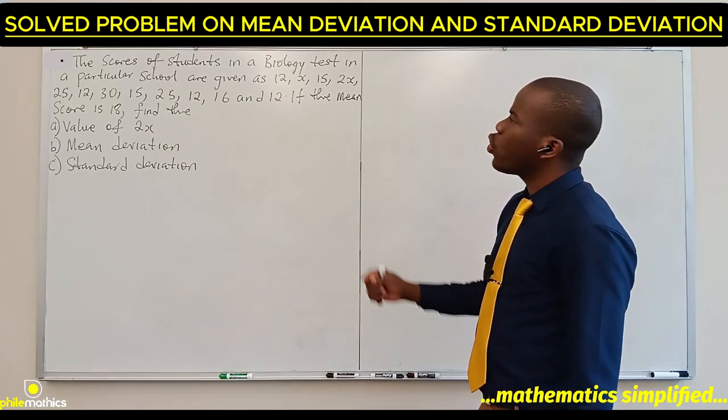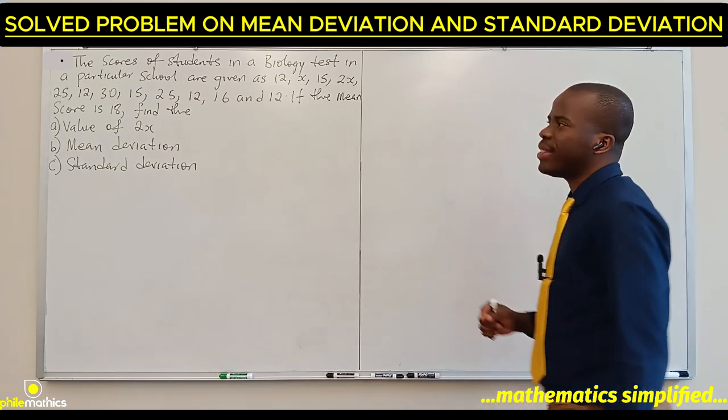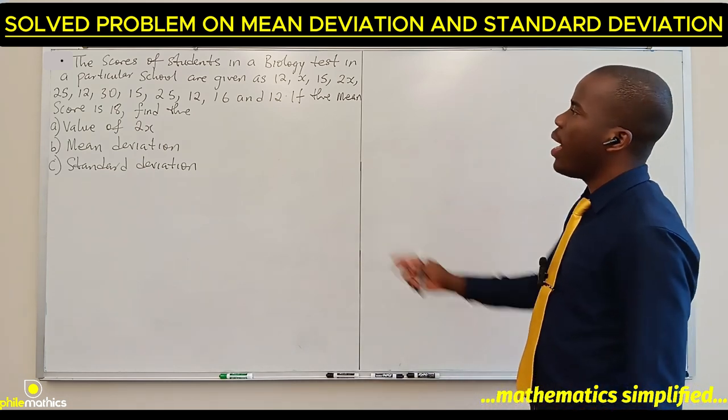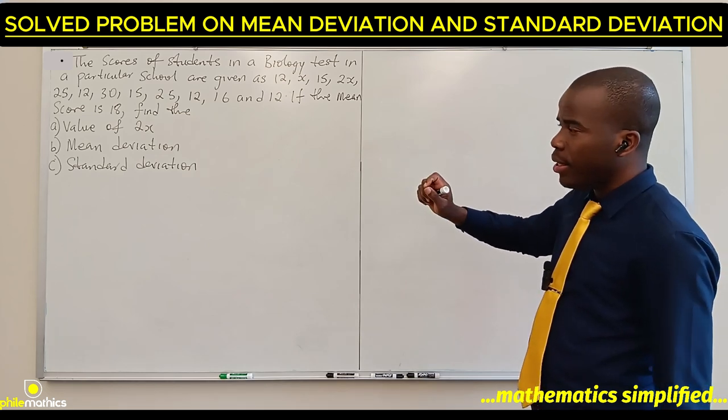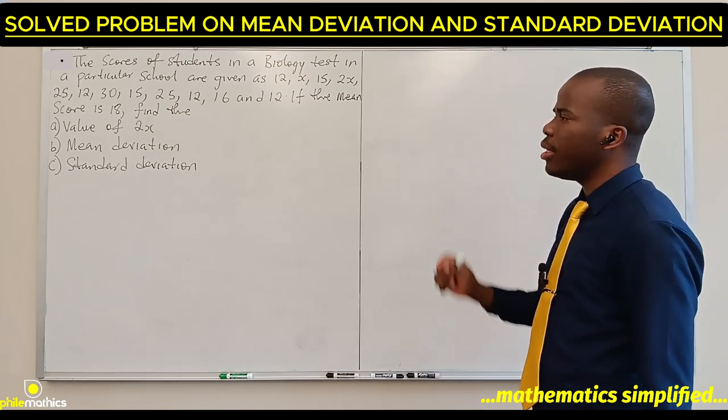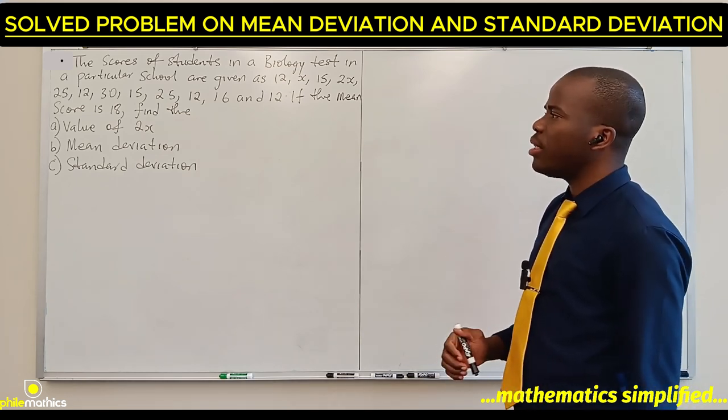The scores of students in a biology test in a particular school are given. If the mean score is 18, find the value of 2x, the mean deviation, and the standard deviation. We use the mean formula.